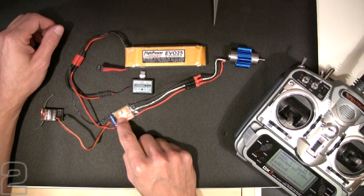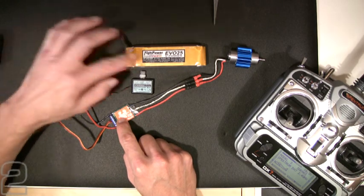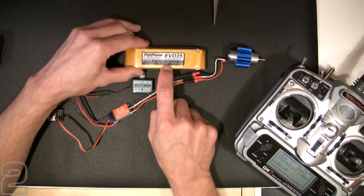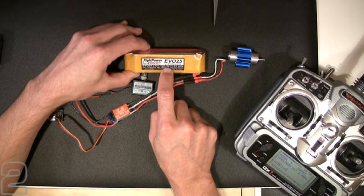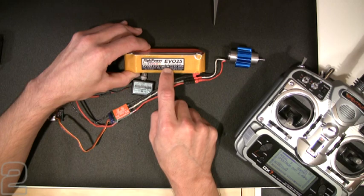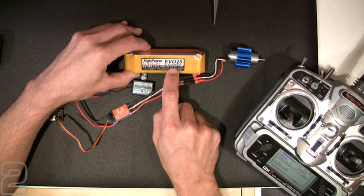The first tones tell me that the ESC has been programmed for a three-cell configuration, which is exactly what I have. This 3S indicator on the battery is telling me that I have three batteries in series, which gives 3.7 times 3, which would be my 11.1 volt pack.